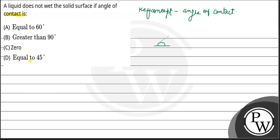What do we call that angle? This is our liquid, and this is making a solid angle. That is what the angle of contact is. The angle of contact can be greater than 90 degrees, zero degrees, or less than 90 degrees.